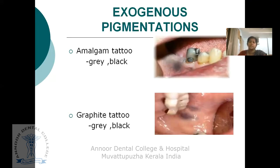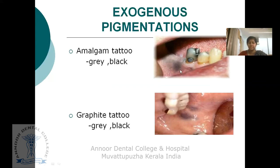One type of exogenous pigmentation is amalgam tattoo. When small pieces of amalgam break up and impregnate into the gingival or oral tissues during filling, during removal of filling, or during extraction, this type of pigmentation can occur. These lesions are macular and gray or black in color.